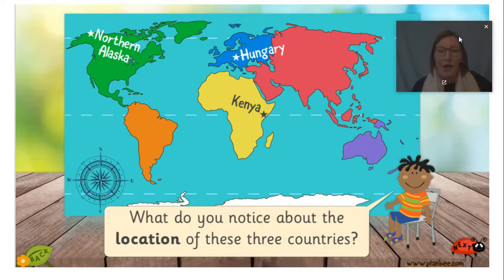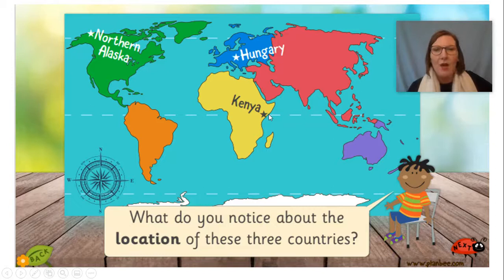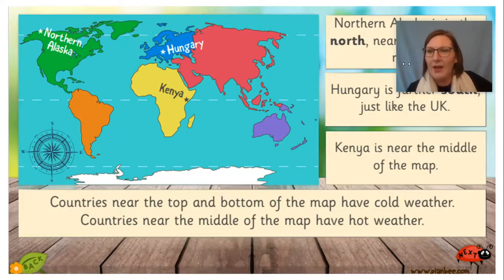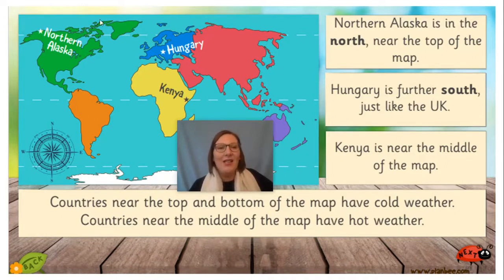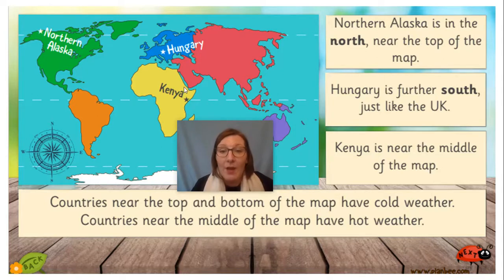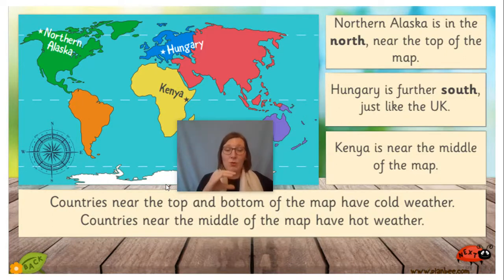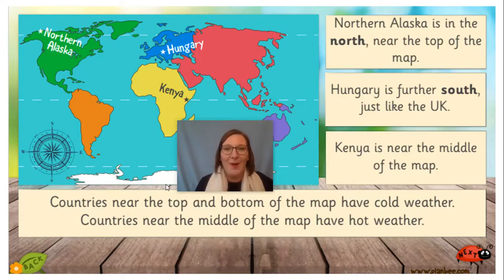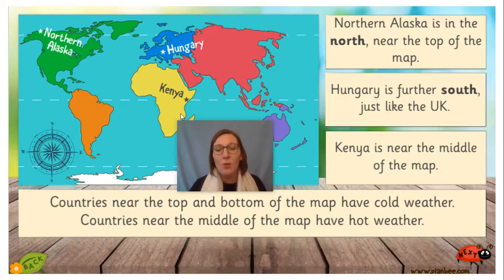Now, what do you notice about the location of these three countries? Northern Alaska is up here, Hungary is here, and Kenya is there. Northern Alaska is in the north — near the top of the map, probably one of the most northern parts of the world. Hungary is further south than northern Alaska. And Kenya is in the middle of the map. Countries near the top and the bottom of the map have very cold weather because they are near the north and the south pole. Countries in the middle have much warmer, hot weather.